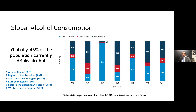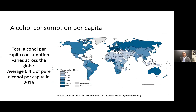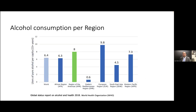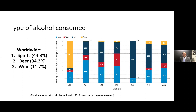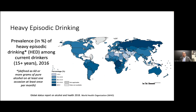Alcohol consumption is very common — 43% of the global population will consume any degree of alcohol. This varies across the globe; the alcohol per capita consumption on average is 6.4 liters — this was in 2016 — but it's close to 10 to 12 in Europe, and other regions are close to 3. The type of alcohol consumed also varies across the globe; in general, most consume spirits, followed by beer and then wine. It's not only the amount, but also the pattern of alcohol consumption. You can have what we call heavy episodic drinking, and this is also very frequent — in some places it can be as frequent as 60% of the population.